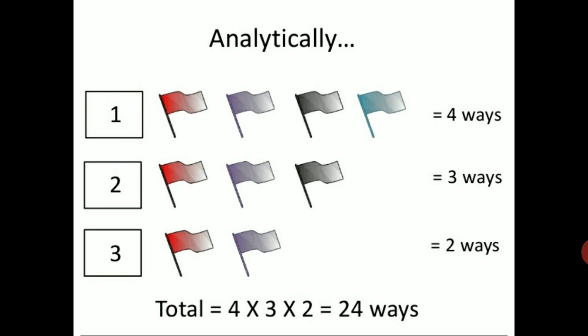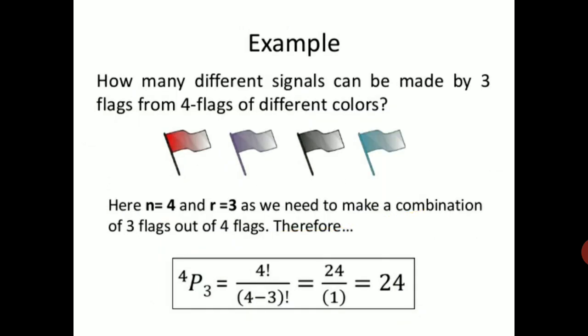The number of choices for the third flag is equal to 2. Therefore, total permutations equal 4 × 3 × 2 = 24. Using the formula, 4P3 equals 4 factorial divided by (4 minus 3) factorial, which equals 24.